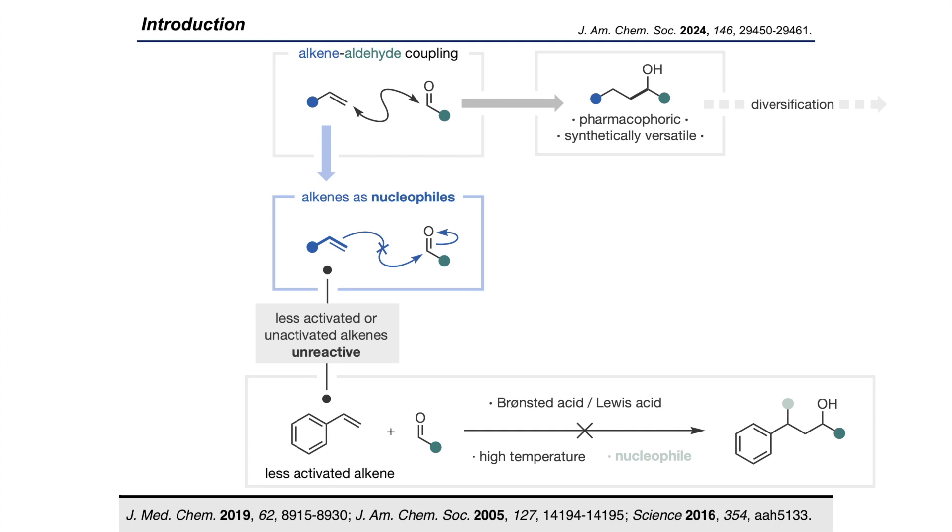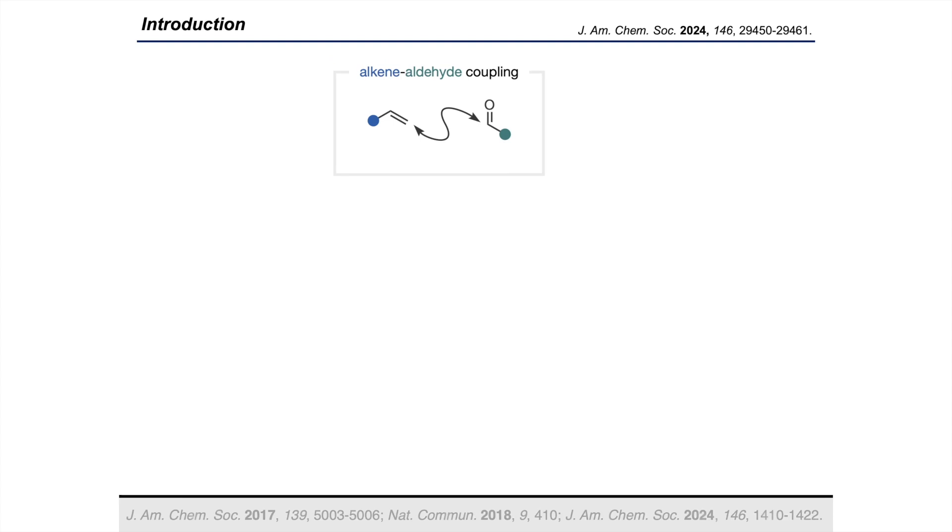One way to modulate the reactivity of these alkenes is to employ metal hydride chemistry where we could generate an organometallic intermediate. But a more recent approach which has garnered considerable attention is where the aldehyde electrophile is turned into a nucleophile through single electron reduction. This approach is tricky because ketyl radicals are inherently unstable—they're prone to dimerization, hydrolysis, oxidative decomposition. Not to mention the radical philicity between these two species needs to be matched, which limits compatibility with electron-rich alkenes.